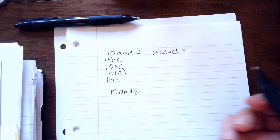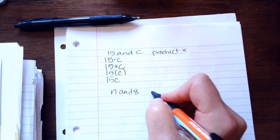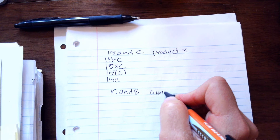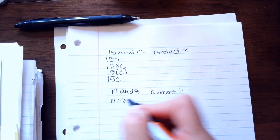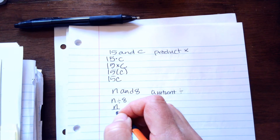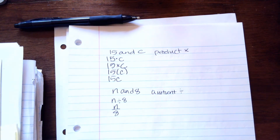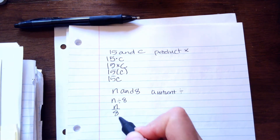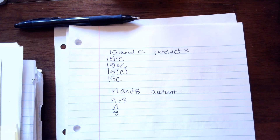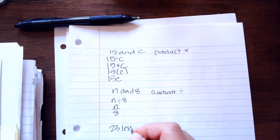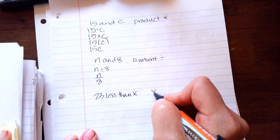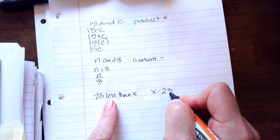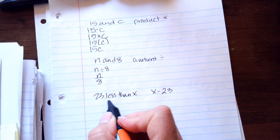The quotient of n and 8 — quotient means division. We don't write it like that; we write it as a fraction with n divided by 8. When they say '23 less than X,' that means there is an X and we're going to do 23 less than that, so you see the order changes.